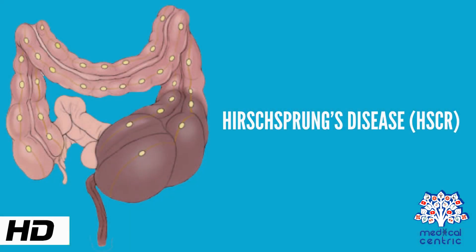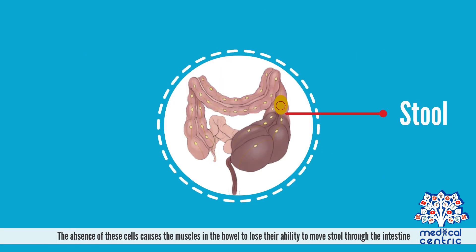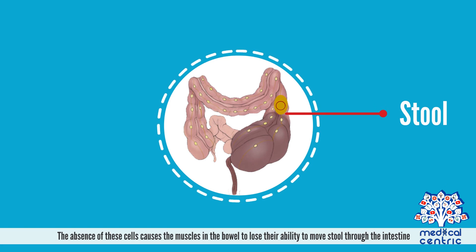Today's topic is Hirschsprung's disease, or HSCR. Hirschsprung's disease is a congenital defect characterized by the absence of particular nerve cells in a segment of the bowel in a baby. The absence of these cells causes the muscles in the bowel to lose their ability to move stool through the intestine.